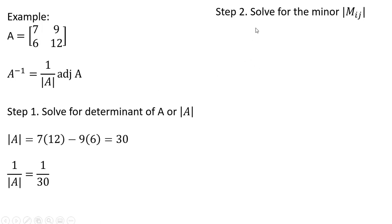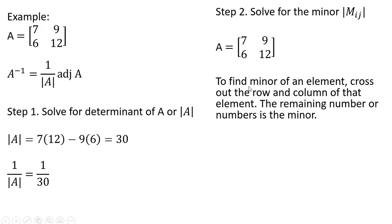Now we're going to start working on the second part and solve for the minor. I represents the row number, and J represents the column number. So how do we find the minor?